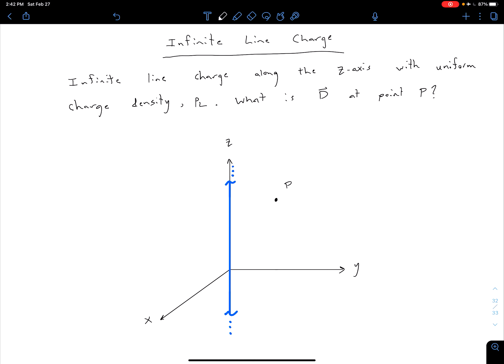And so what we want to define first is what type of Gaussian surface should we use. So what is our Gaussian surface? Maybe go ahead and pause the video and think about that for a second and see if you can't figure it out.